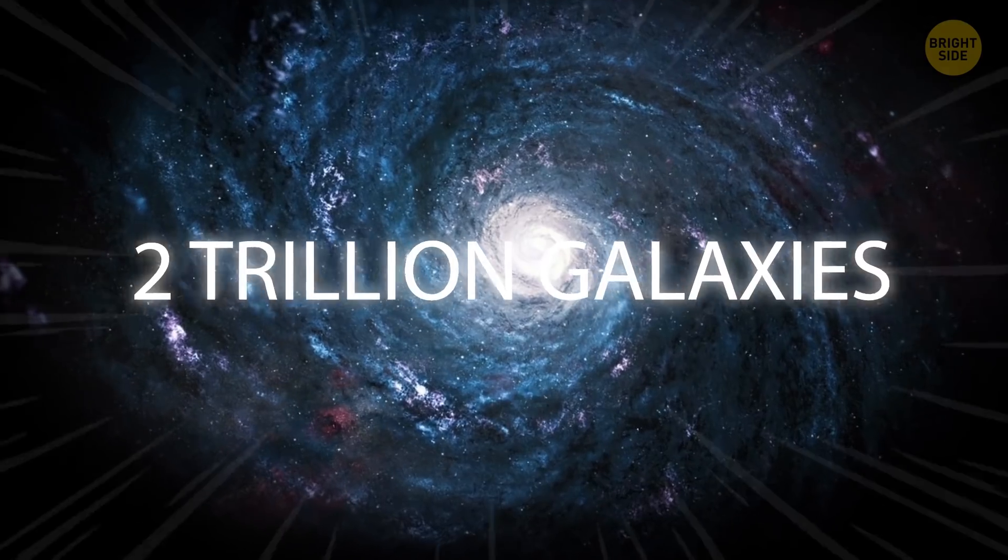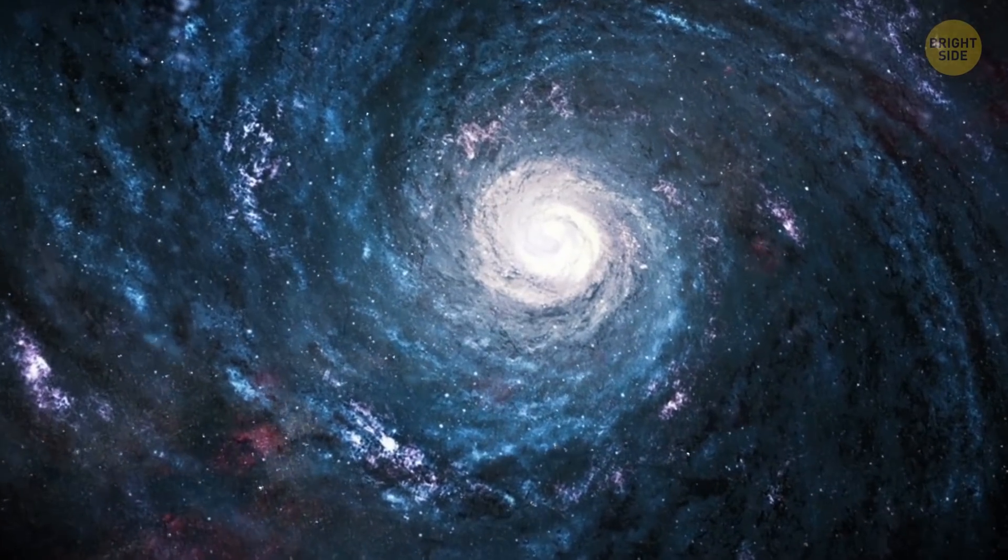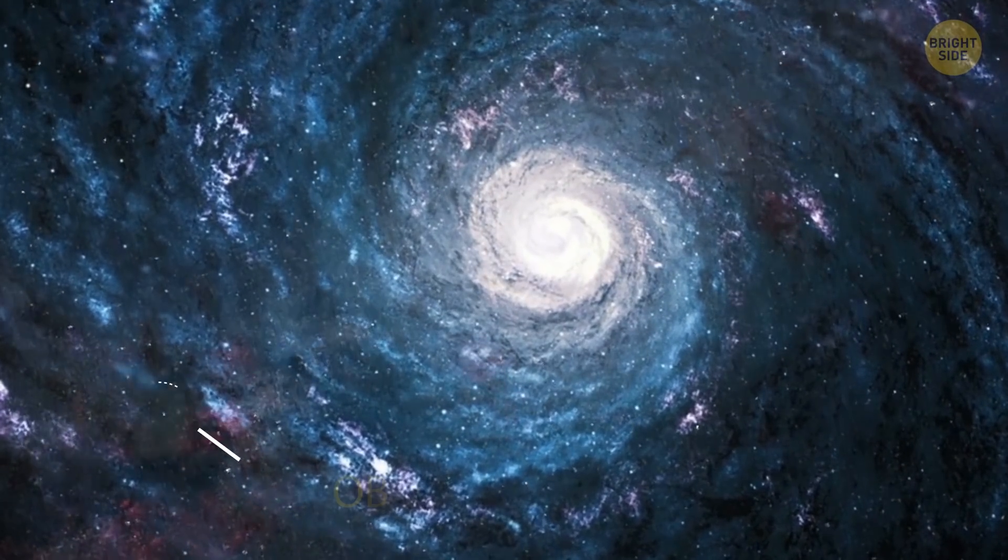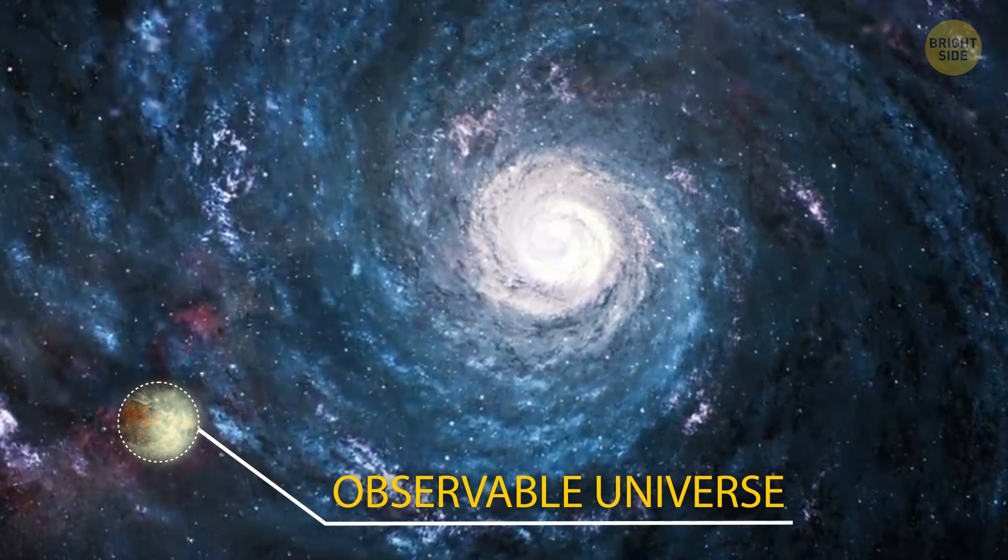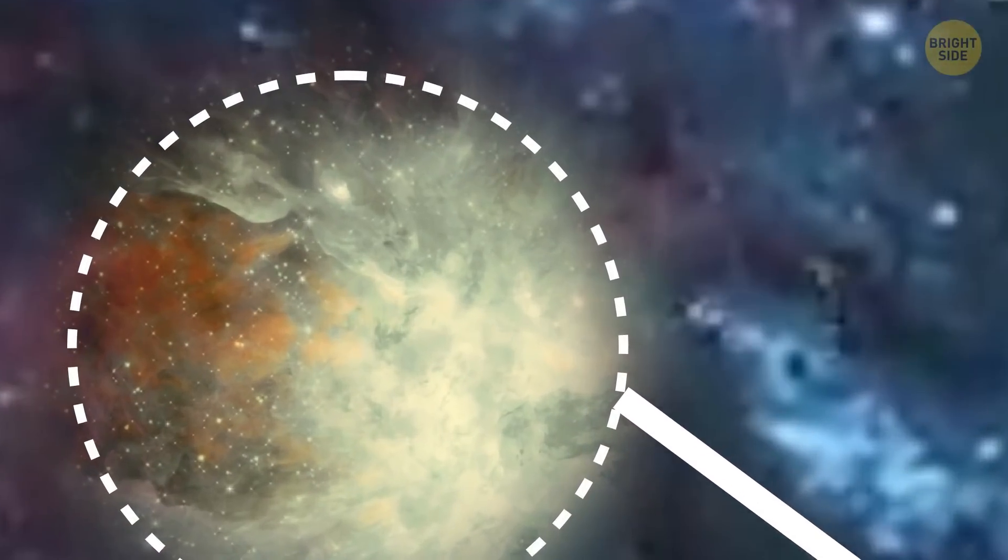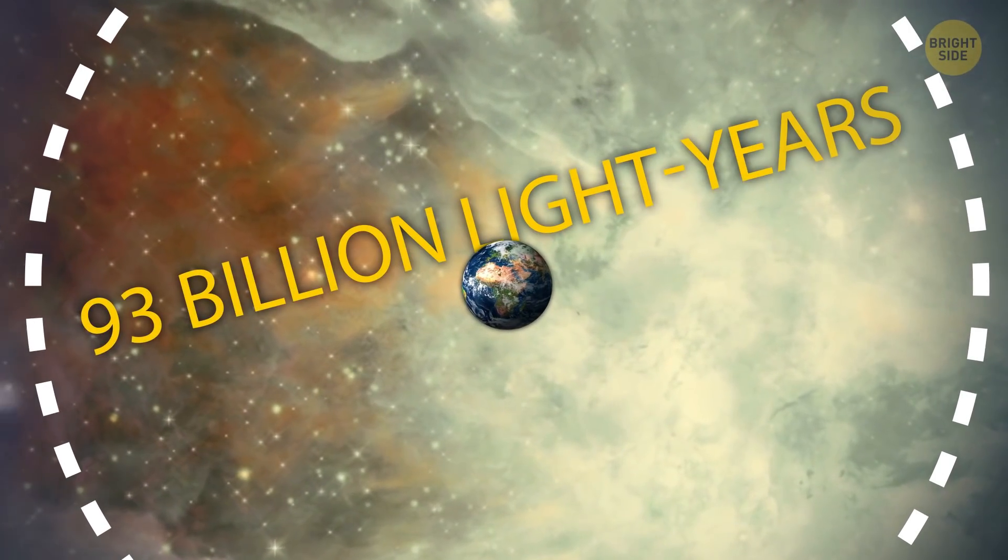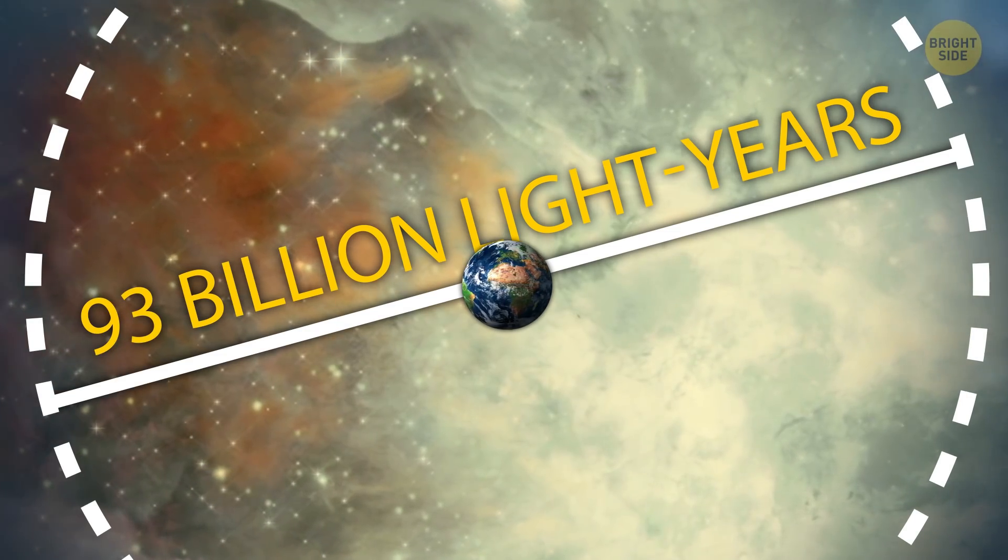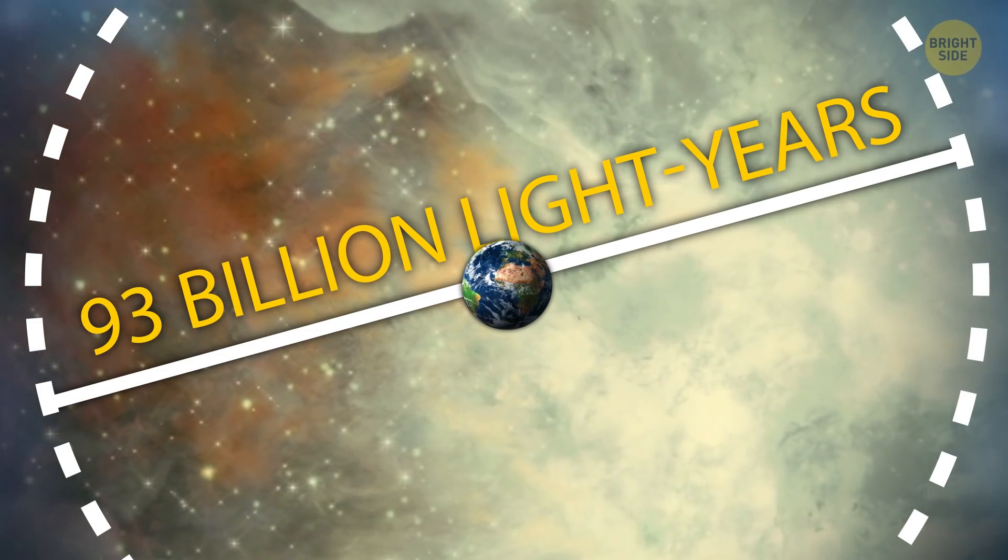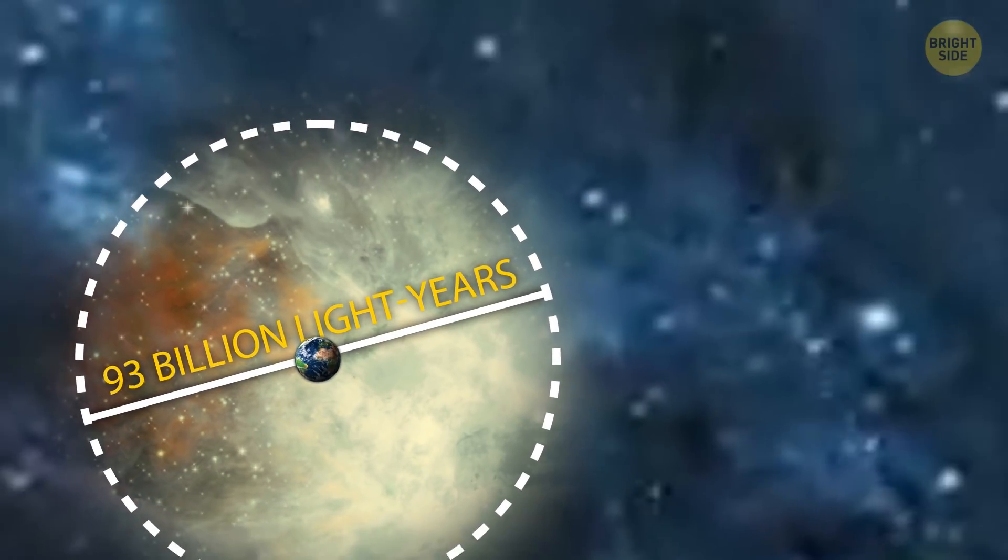These galaxies lie in what is known as the observable universe. The observable universe is the part of the universe that can be seen from Earth or from space-based telescopes like the Hubble. Right now, it's 93 billion light-years in diameter. These galaxies are those from which light has reached us since the beginning of the universe. Have we blown your mind yet?